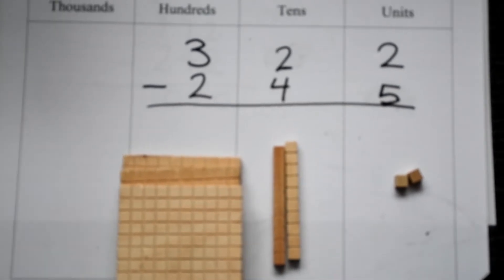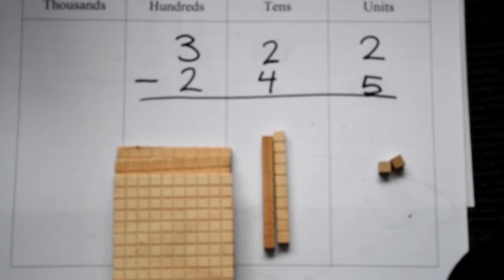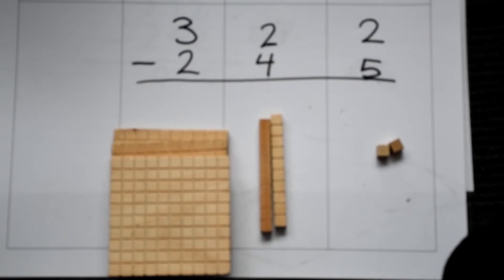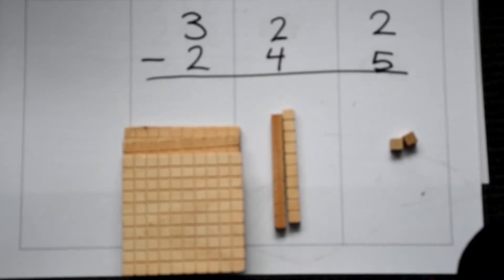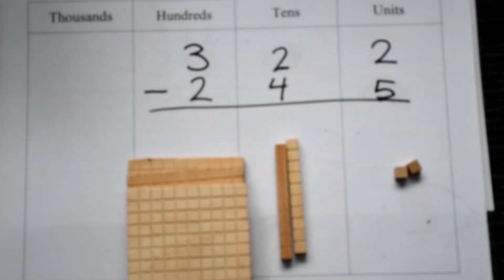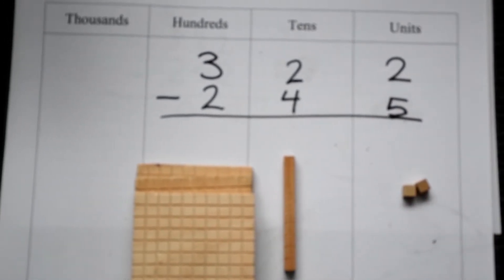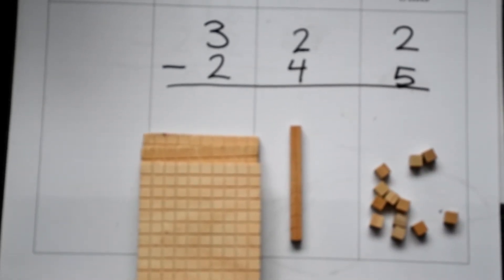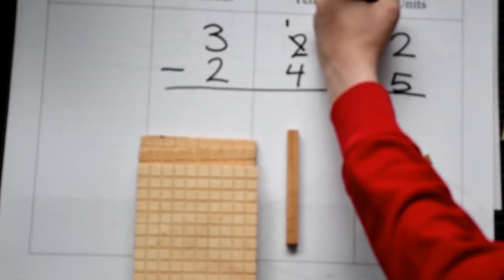Now we're doing another subtraction with regrouping. Our sum is 322 minus 245. We start with the units. We have 2 units and need to take away 5. Since you can't do 2 minus 5, we take 1 of the tens and split it into 10 units. We now have 1 ten left and 12 units.